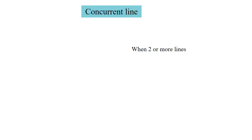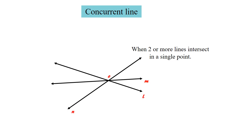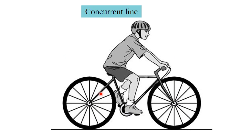The next concept is concurrent lines. When two or more lines intersect at a single point, those lines are called concurrent. Here, line L, line M, and line N are intersecting at point O. Therefore, point O is called the point of concurrence. Look at this bicycle's wheel — you can see concurrent lines where multiple lines intersect at one point only. This is an example of concurrent lines.